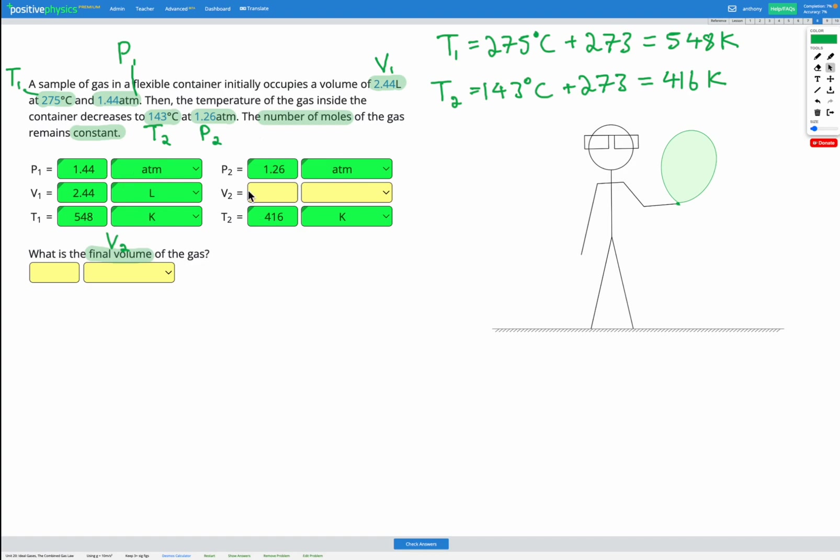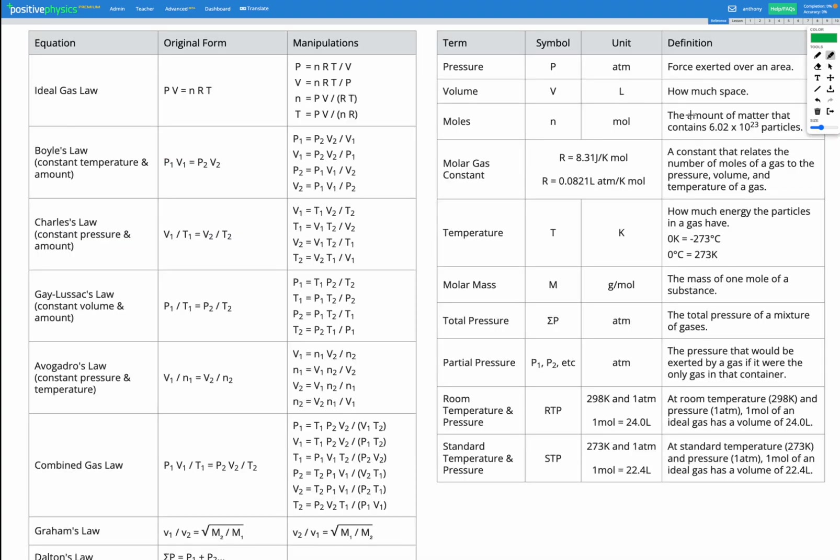So we've got all our known variables and we're left finding V2. So let's go ahead and look for an equation. Down here we have the combined gas law. P1 times V1 over T1 equals P2 times V2 over T2. So that's a combination of our other gas laws together, including pressure, volume and temperature.